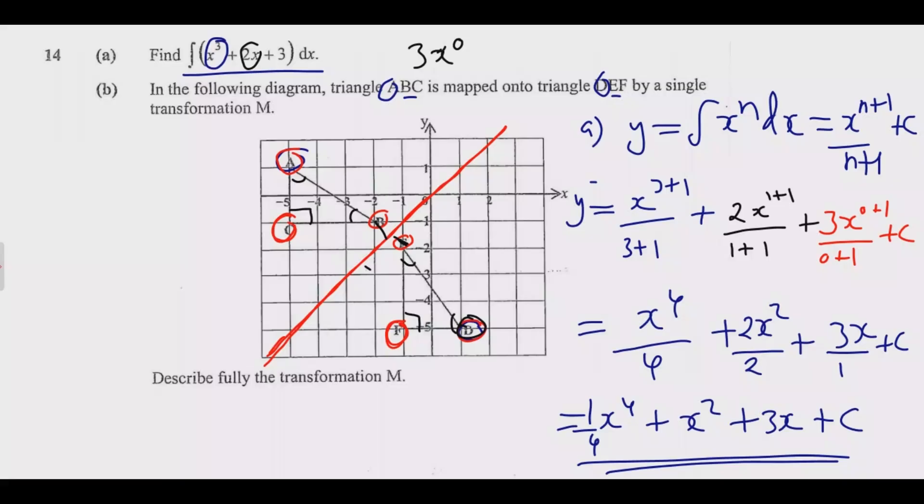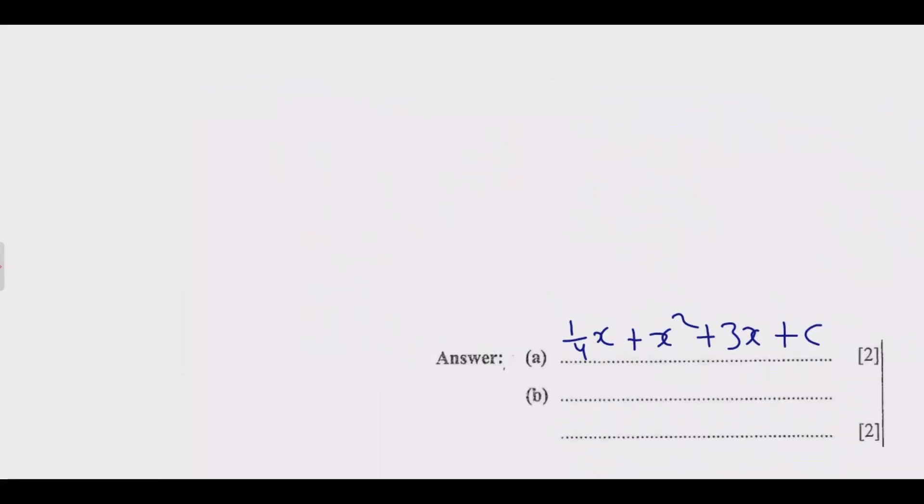Then after that, once we know that this is a reflection, we need to describe it. How do we describe reflection? A reflection is completely described by giving the equation of the line of reflection. So the first thing that we need to do is this is a reflection.